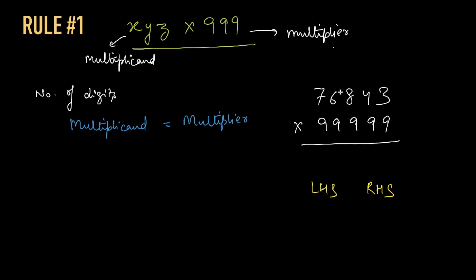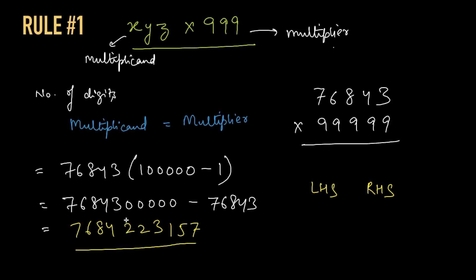Now as you can see we have fulfilled Rule Number 1, where the number of digits of the multiplicand is the same as that of the multiplier. In both cases there are 5 digits. And if we calculate this using normal method, the answer would come like this. Now as you can see the answer is huge, and if you try to solve it, it will take a lot of time. But with our super shortcut method, let's see how we can find the answer. To find LHS, we subtract 1 from the multiplicand, so it would be 76842. To find RHS, we keep subtracting the digits from 9, and the last digit would be subtracted from 10 instead of 9. So this would be 9 minus 7 is 2, 9 minus 6 would be 3, 9 minus 8 would be 1, 9 minus 4 would be 5, and then 10 minus 3 would be 7. So we have the answer which is same as this one. I hope Rule Number 1 is clear to you.